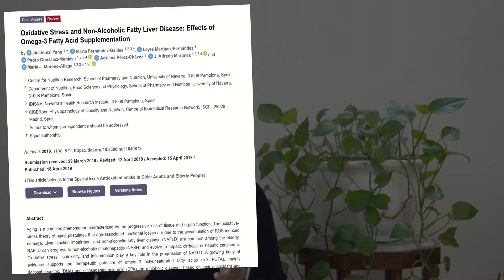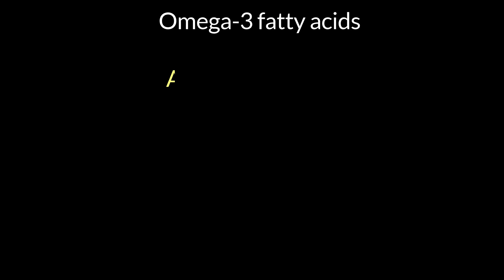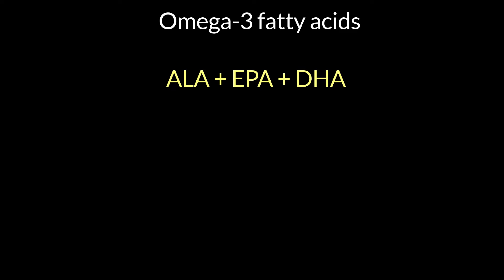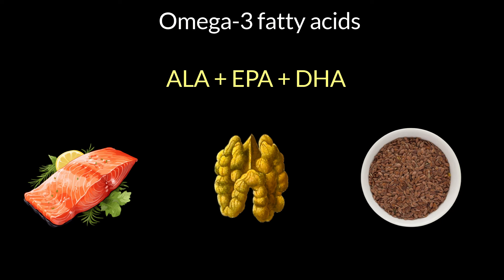Like vitamin E, omega-3 fatty acids are powerful anti-inflammatory agents. They act by reducing oxidative stress in the body and have been found effective in reversing the oxidative damage caused to the liver during the initial stages of fatty liver disease. The three main omega-3 fatty acids are ALA, EPA, and DHA. Since our body cannot synthesize these, they must come from supplementation or diet — sources include fatty fish, walnuts, flaxseeds, and chia seeds.